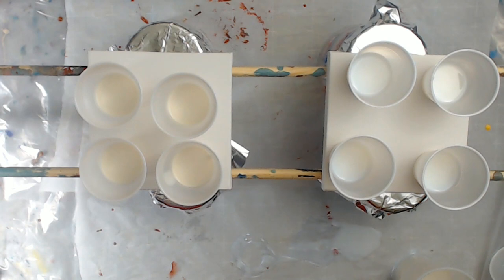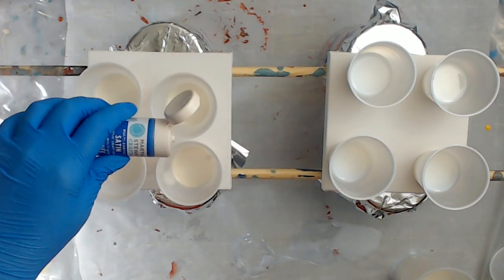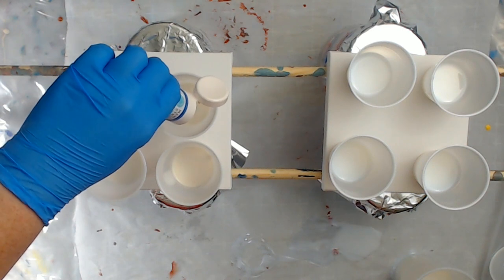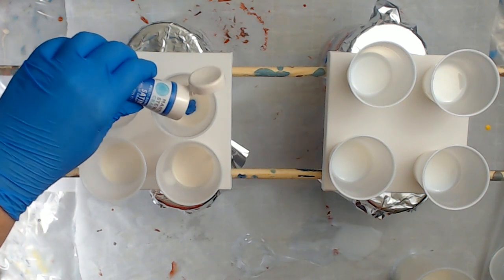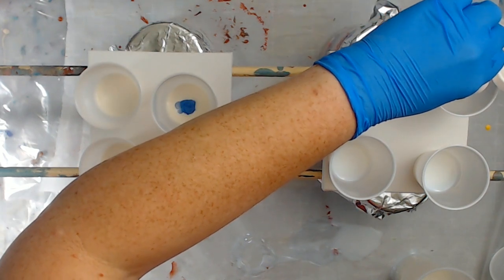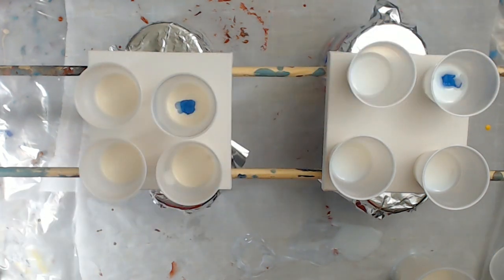Now what I'm going to do is start with the Greek tile and I'm just going to squirt some in. This should work fine with the pouring medium too. That was Greek tile.